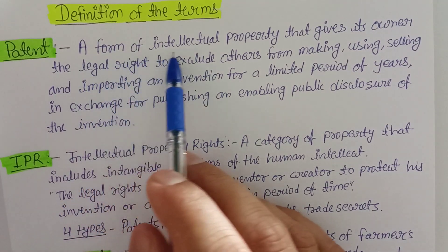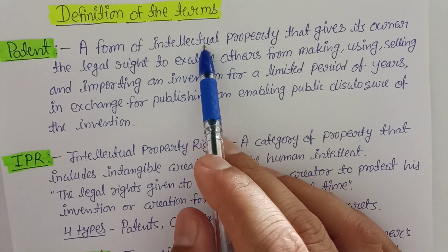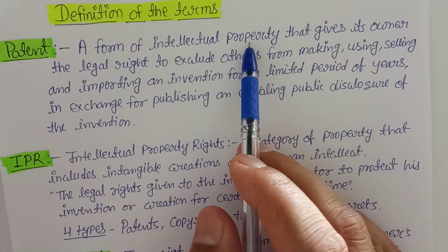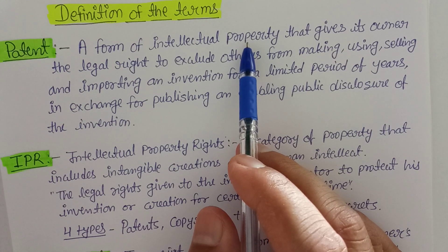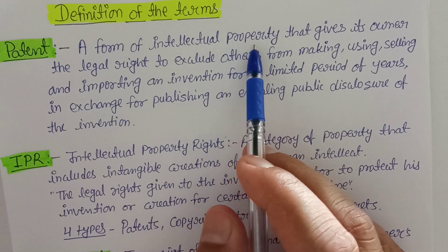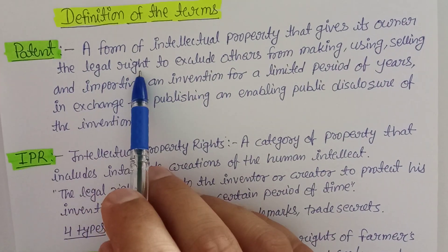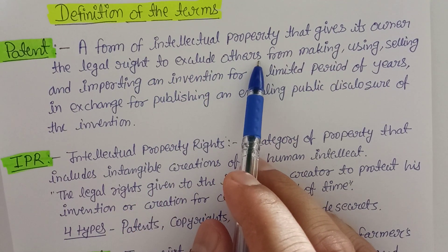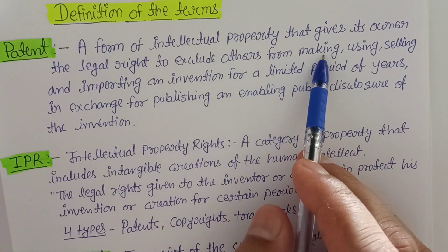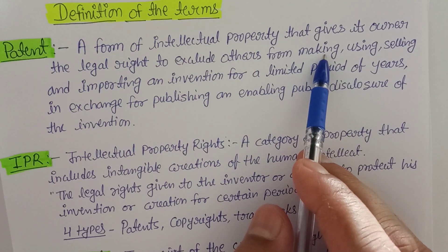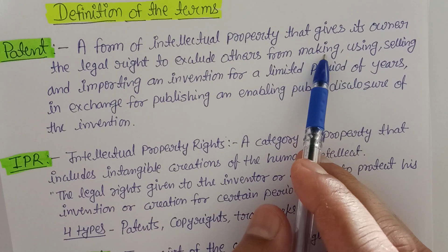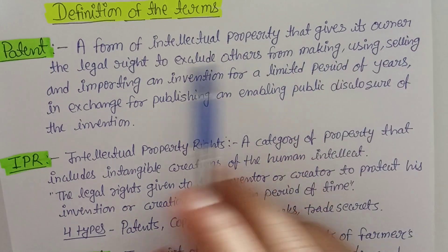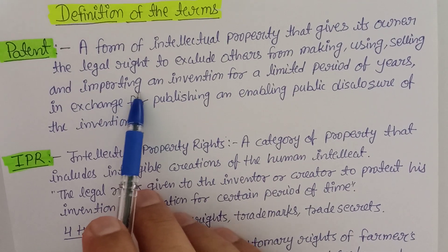When we talk about patent, it is a form of intellectual property. Those who have used their intellect and have prepared something — maybe they invented some kind of thing, it may be a material, a method, or any design — that gives its holder a legal right to exclude others. If somebody has done that, they will have the legal right to protect it from being made by anyone else. For example, a mobile phone, any kind of engine, glass, equipment, anything.